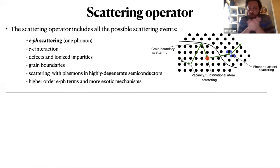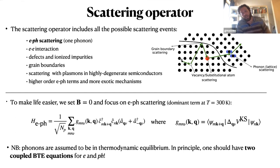Now, so far we haven't discussed the microscopic nature of the scattering operator. In principle, one should include all the possible events. In particular, we have electron-phonon scattering, one phonon and multiple phonons, as well as electron-electron interaction, scattering with defects and ionized impurities, and this contribution is very important in doped semiconductors. We should also include the scattering with grain boundaries and other mechanisms, including high order terms. Obviously, this complicates significantly the mathematical problem, so to make life easier, we start to introduce additional assumptions.